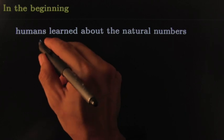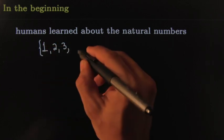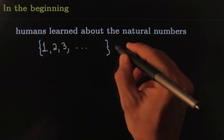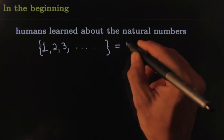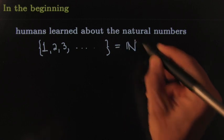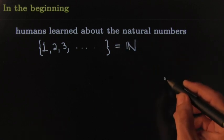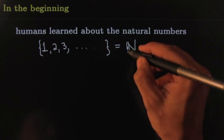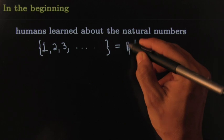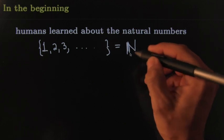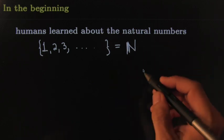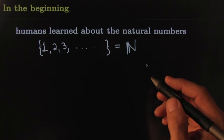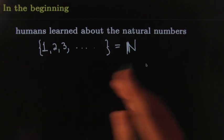There's even a famous symbol for them. If you take all these numbers and collect them into one bunch, we would call this a set of natural numbers. We use this fancy letter — fancy because it's got the double side on the edge — and that would be called the set of natural numbers.